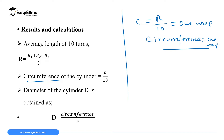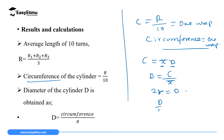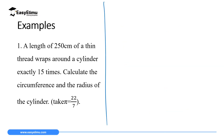Once you have the circumference, you can find the diameter using the mathematical relationship: circumference = πd, where d is the diameter and π is a constant. So diameter = circumference ÷ π. If you need the radius, use 2r = d, so divide the diameter by 2 to get the radius of the cylinder.